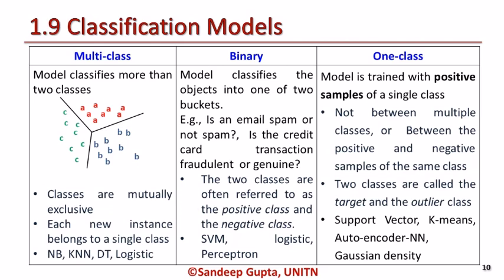The one-class classification model is trained only with positive samples of a single class, not between multiple classes or with positive and negative samples of the same class. They are best suited for cases where class data is abundant, and are also called novelty or anomaly detectors. Widely used classifiers for the one-class model are support vector, k-means, auto-encoder, and Gaussian density-based classifier.